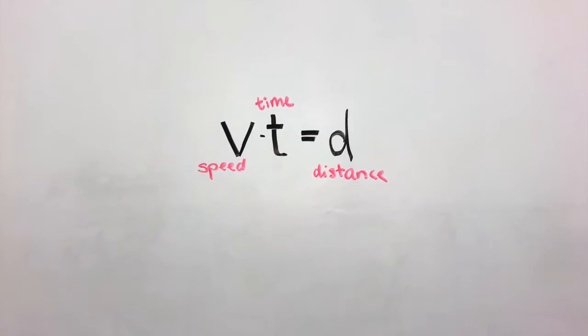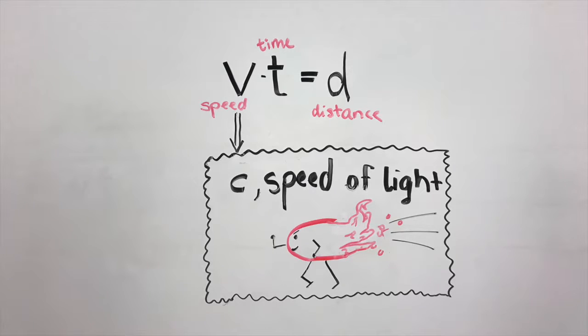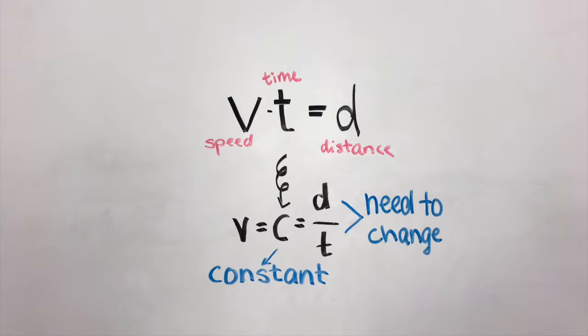As we all know, speed multiplied by time equals distance. In our case, v is c, the speed of light. But as the second postulate tells us, the speed of light is always constant, meaning the two other variables have to change: time and distance.